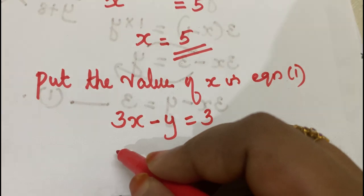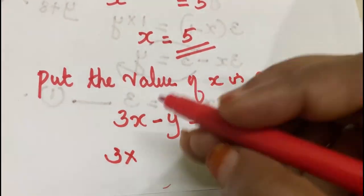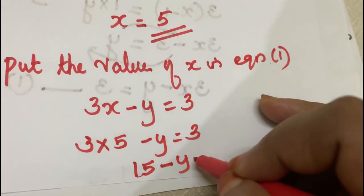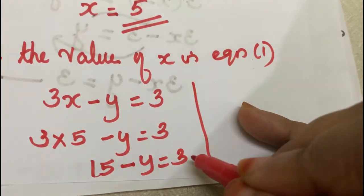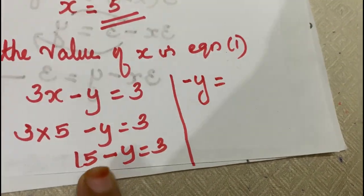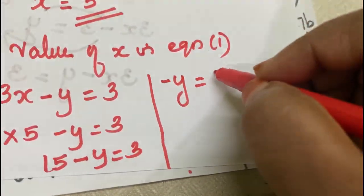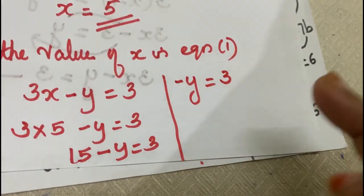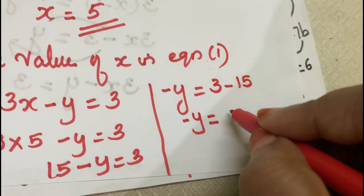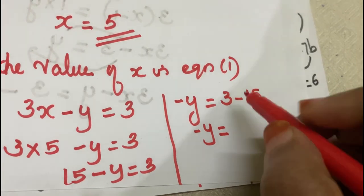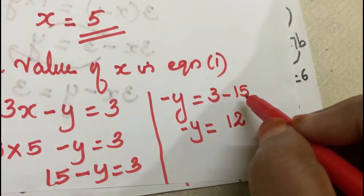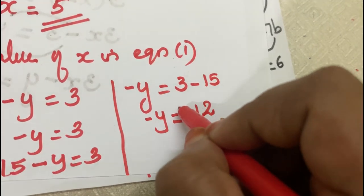3 into 5 equals 15. So 15 minus y equals 3. Transposing, minus y equals 3 minus 15, which gives minus y equals minus 12, so y equals 12.